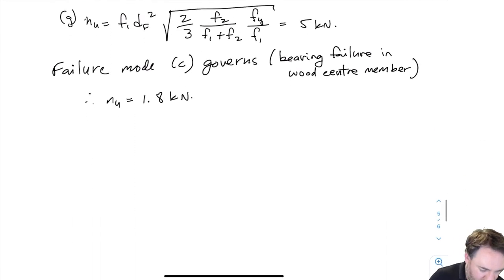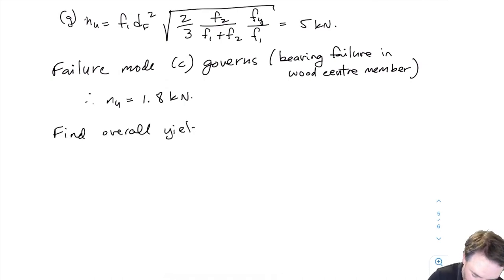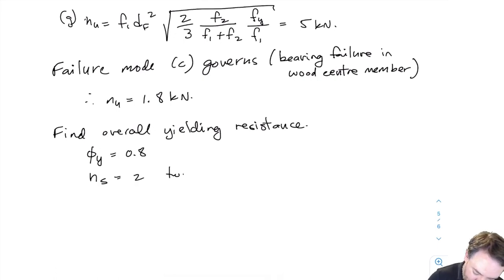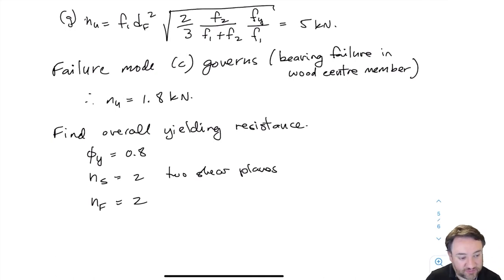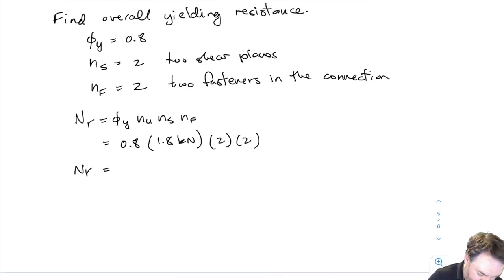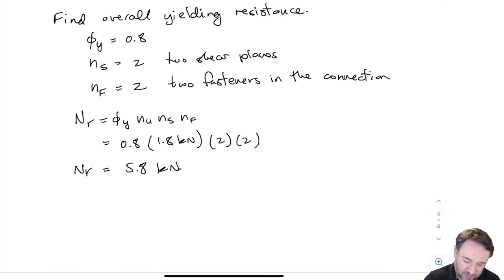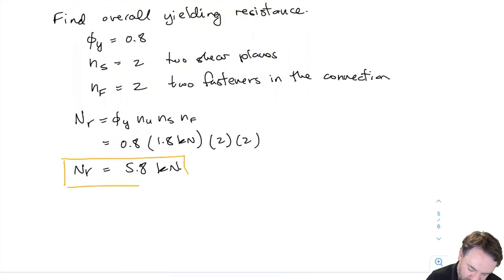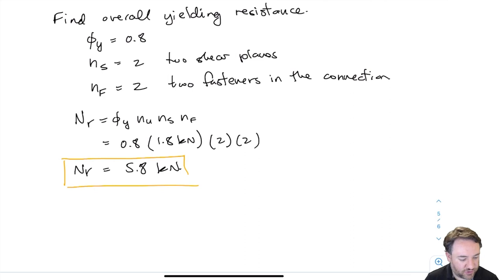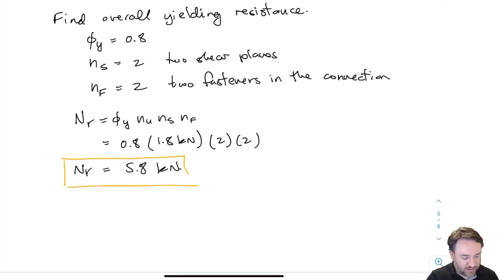Now that I know the unit yielding resistance, I can find the overall yielding resistance. We have 2 shear planes (three-member connection) and 2 fasteners. Plugging into NR = φ_Y × n_U × n_S × n_F, the total yielding resistance of the connection is 5.8 kN in the direction of the load. In the next video we'll start calculating the resistances for the beam, covering row shear, net tension, and splitting.